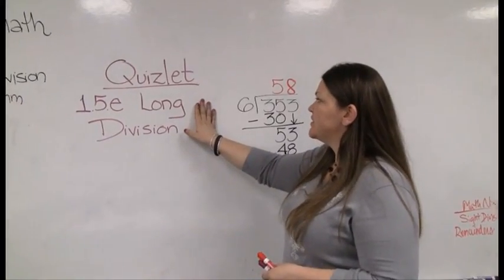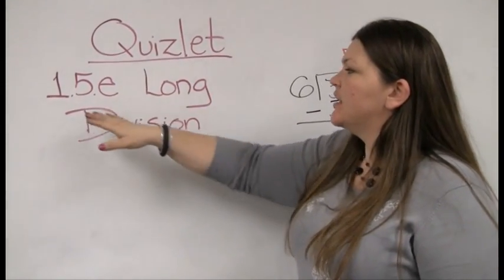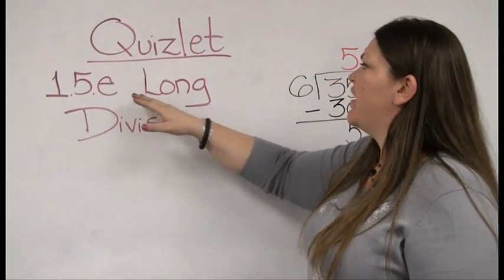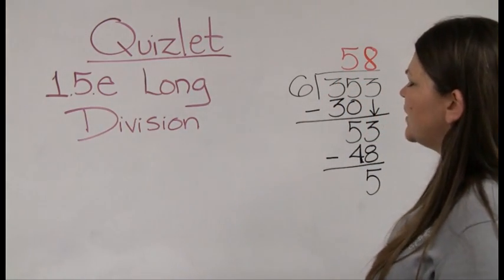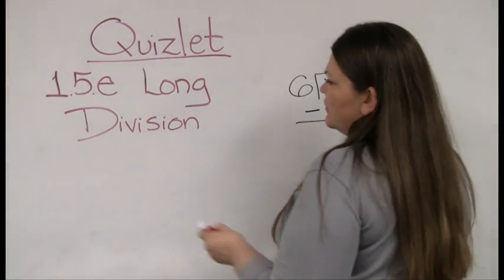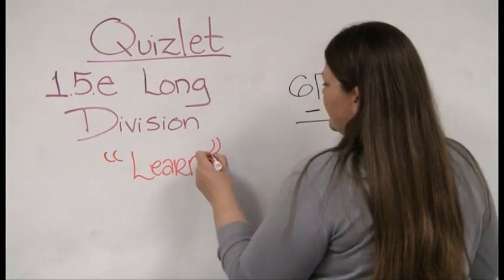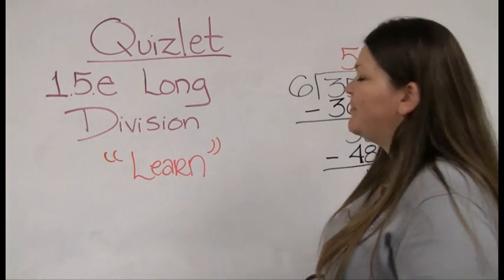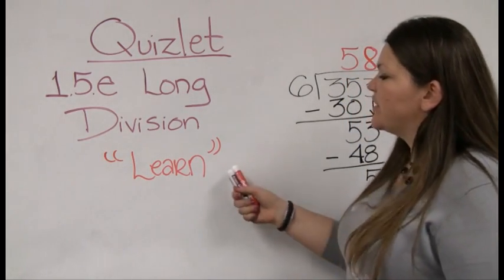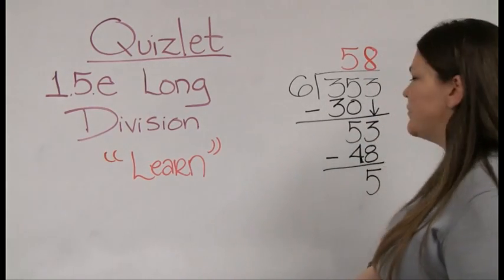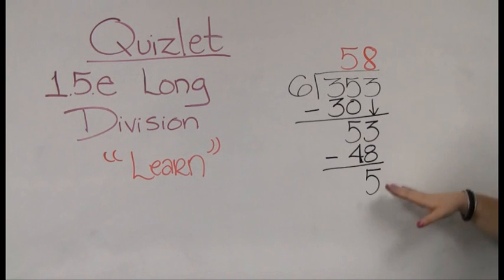So the homework for today's lesson is, again, in Quizlet. It's entitled 1.5e Long Division. And you should do it in learn mode. But as some of you guys have already figured out, learn mode can be pretty picky about how you type your answer in. It only accepts it if your answer looks exactly like mine. So I don't want any of you guys to be confused about how to type in your answer when you have a remainder.